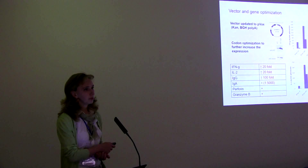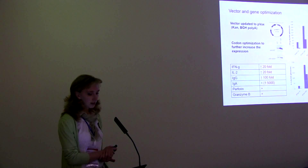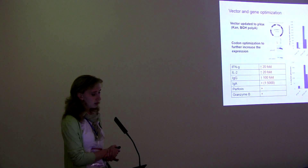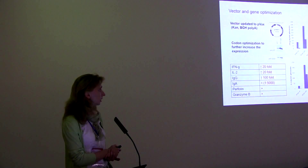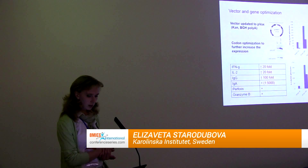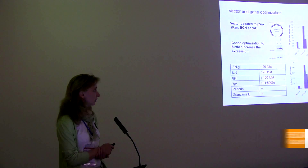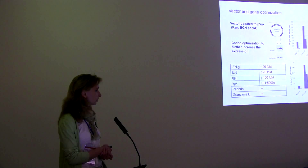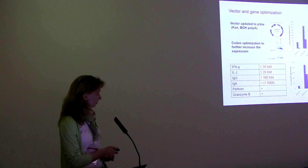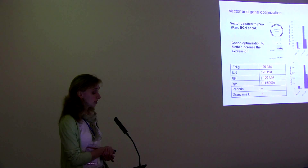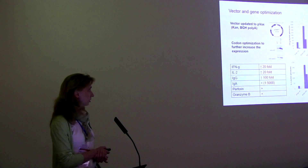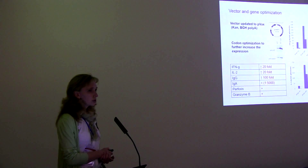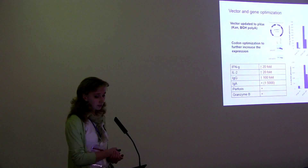The next step of optimization of our gene immunogen was an update of the vector. We moved to the commercial vector pVEX, which has a different poly-A signal and different antibiotic resistance. We also performed codon optimization of the RT gene, since we saw a very good effect of increased protein accumulation in the cell on immunogenicity. In the new vector with codon optimization, the gene was expressed at almost 20-fold higher levels than the non-optimized gene.